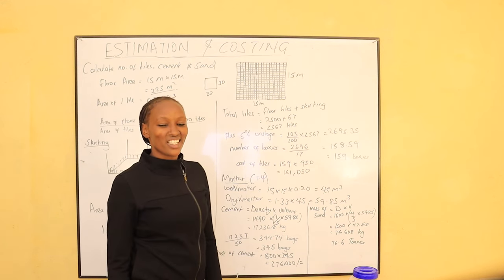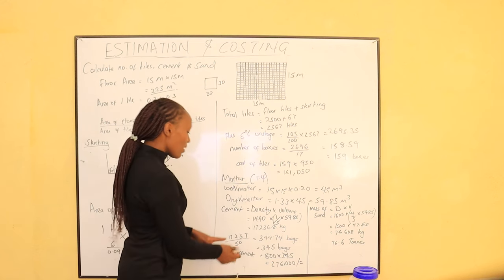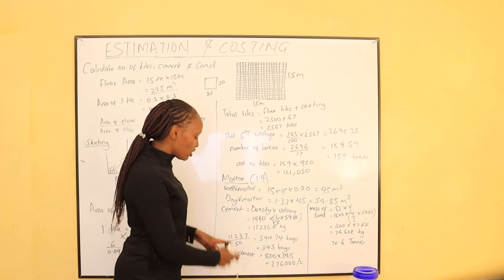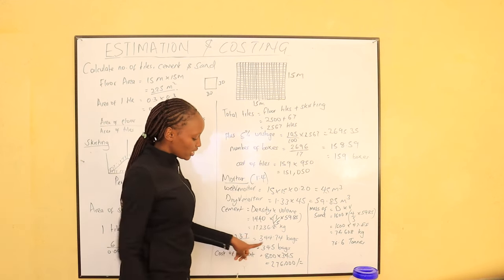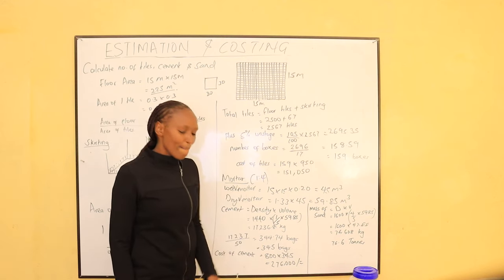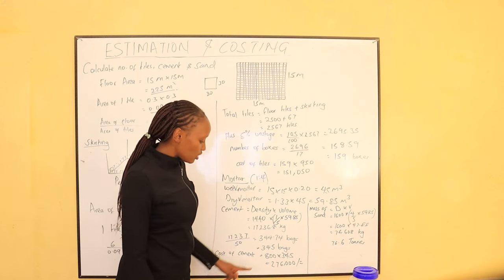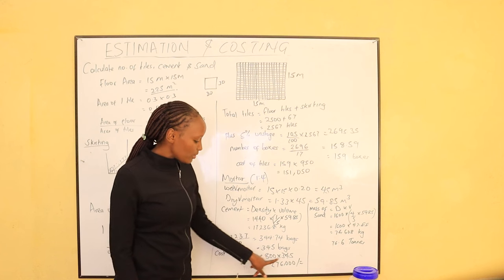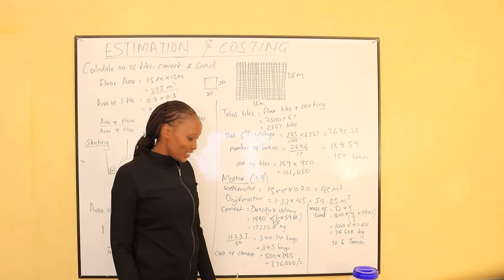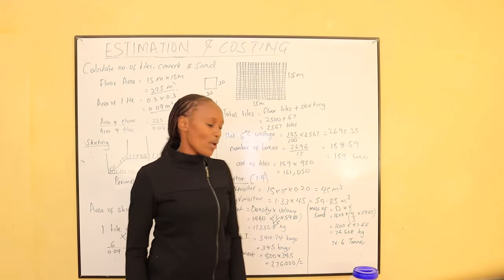One bag of cement equals 50 kg. The mass of cement calculated is 1,440 × 1.197 = 1,723.68 kg. Dividing by 50 kg per bag gives 34.47 bags, rounded up to 35 bags. If one bag of cement costs 800 shillings, the total cost of cement is 800 × 35 = 28,000 shillings.